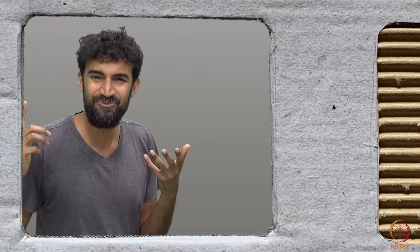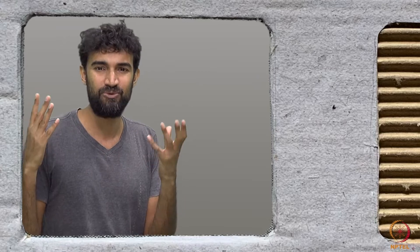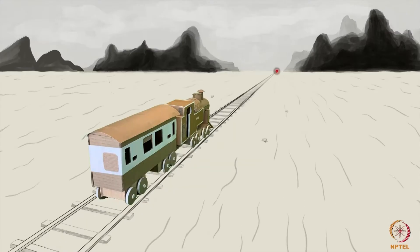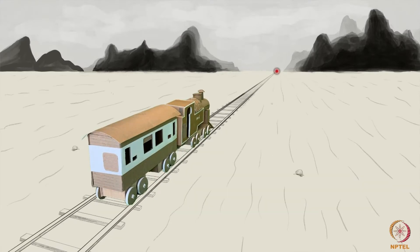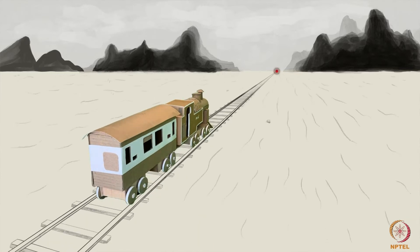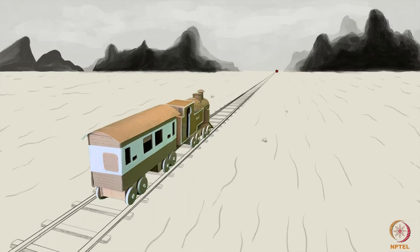But wait a second, is it really true that points remain points under changes in perspective? After all, we've seen how some points, the points at infinity, seem to appear and disappear depending on our perspective. So our geometry will also have to account for these points at infinity.